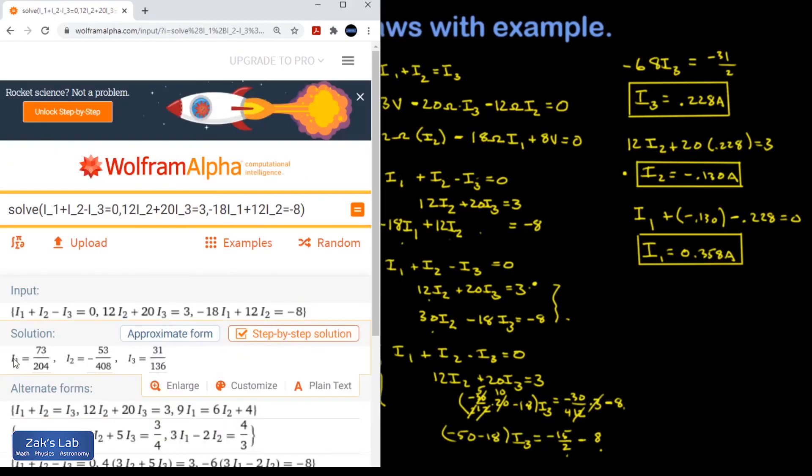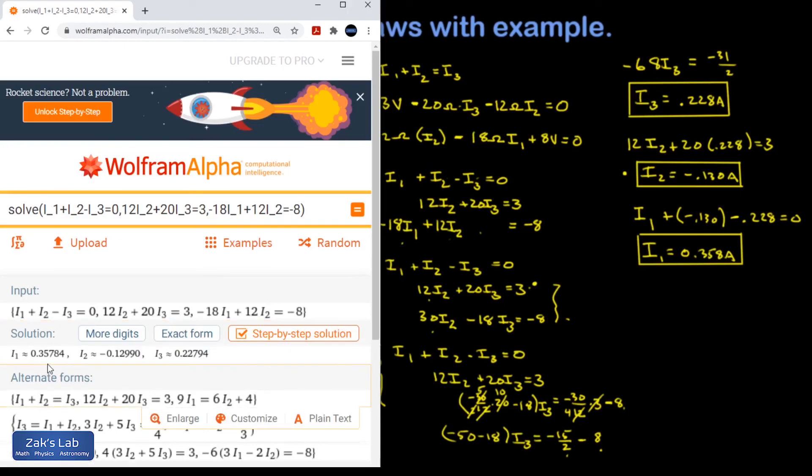All right. Wolfram produces exact fractional answers for us. And then I'm going to click on approximate form. And I get 0.358 for I1. Negative 0.130 for I2. 0.228 for I3. So this also agrees with the work that we did by hand.